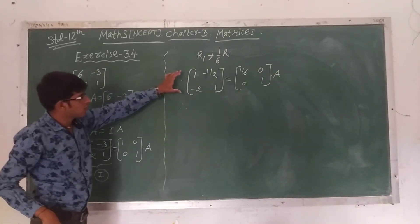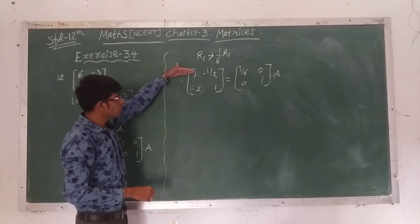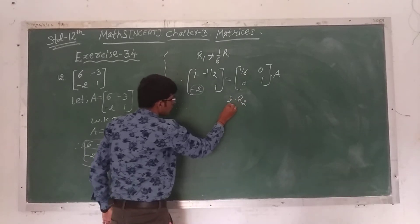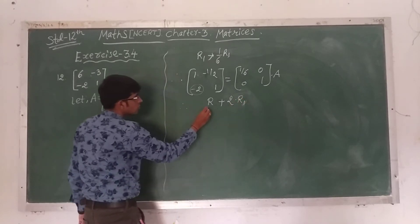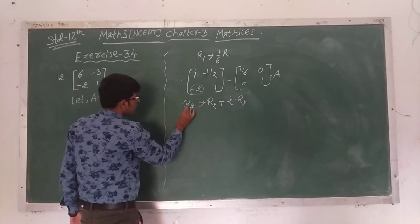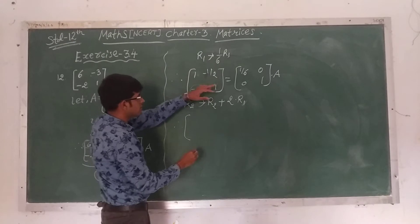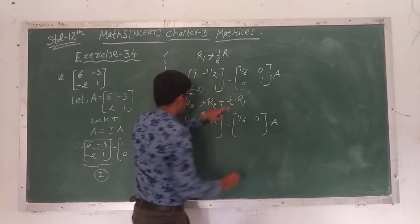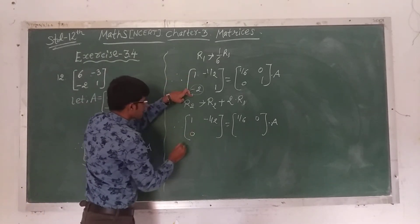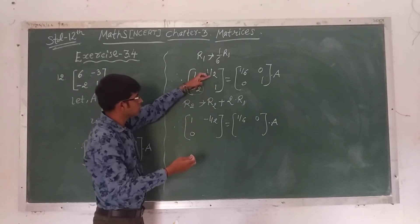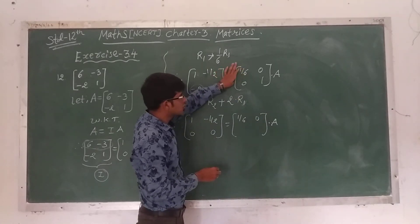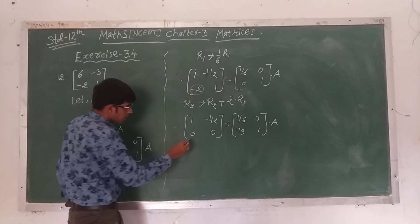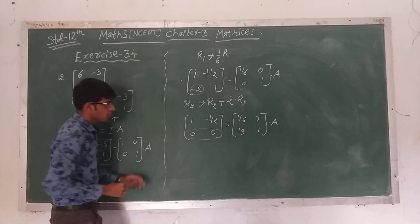What is our next goal? We have to make the A(2,1) element equal to 0. We multiply the first row by 2 and add to the second row: R2 tends to R2 + 2R1. First row as it is: [1, -1/2] and right hand side [1/6, 0]. Second row: -2 + 2×1 = 0, and -1/2×2 + 1 = -1 + 1 = 0. Right hand side: 1/6×2 + 0 = 1/3, and 0×2 + 1 = 1. So the second row of the left hand side becomes entirely 0.